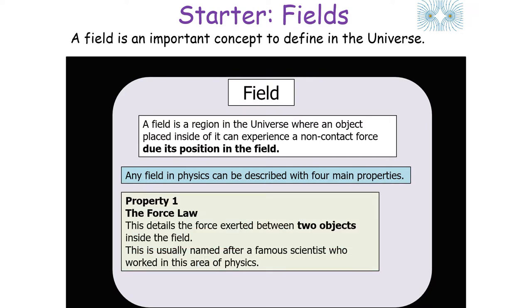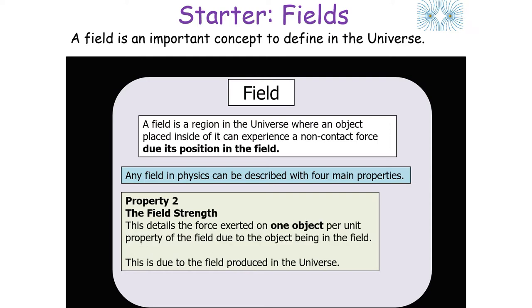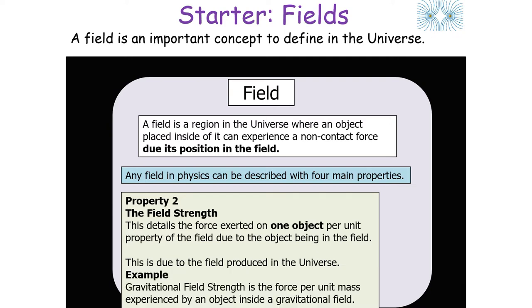The first property is the force law, which details the magnitude of the force exerted between two objects inside the field and is usually named after a famous scientist. The second property is field strength, which details the force exerted on one object per unit property of the field. For example, gravitational field strength is the force per unit mass experienced by an object inside a gravitational field.